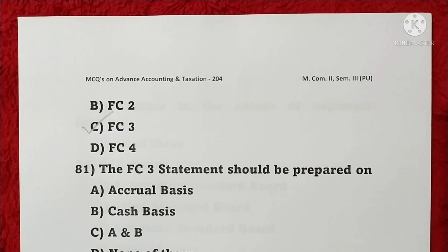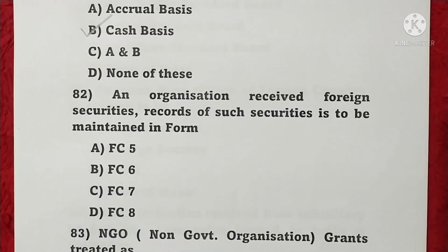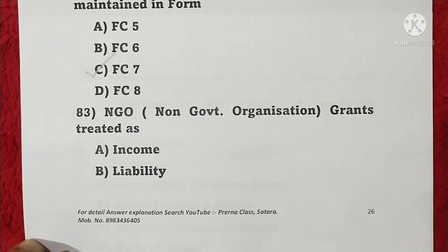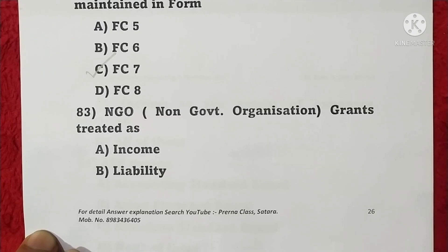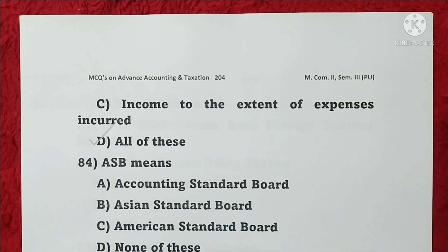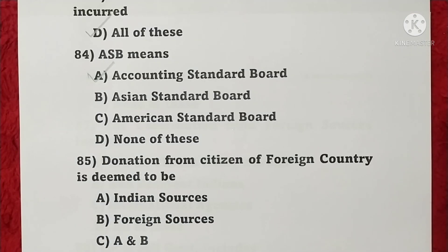Question 81: The FC3 statement should be prepared on a cash basis — option B is correct. Question 82: On receipt of foreign securities, the record of securities is to be maintained in the form FC7 — option C is correct. Question 83: NGO grants are treated as income, income to the extent of expenses incurred, and all of these — option D is correct.